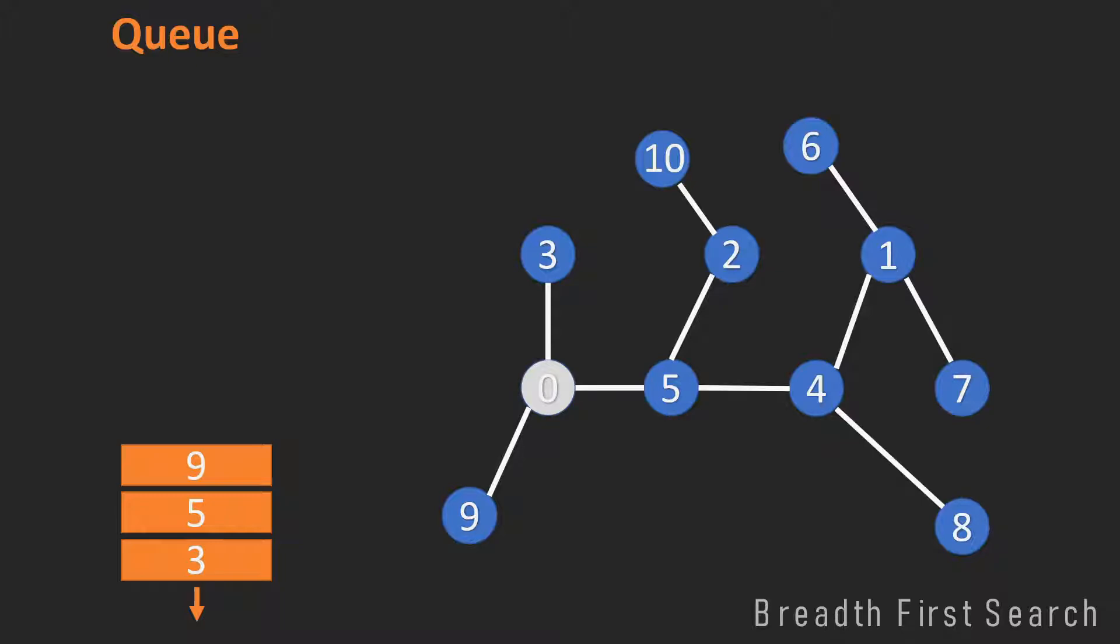And now the algorithm looks for the next node to visit. The next node to visit is always the first one in the queue, so in this case 3. So the algorithm visits 3 and puts every neighbor of the 3 that has not been visited in the queue. The only neighbor of the 3 is 0, and 0 has already been visited, so nothing happens in this case. And 3 will be removed from the queue.